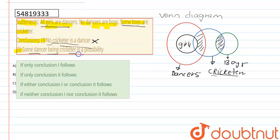Some dancer being cricketers is possibility. So, the common part is the answer. Dancers and cricketers. This is common part. This is possibility. Yes, this is possible.